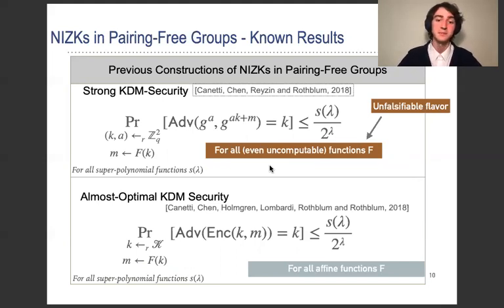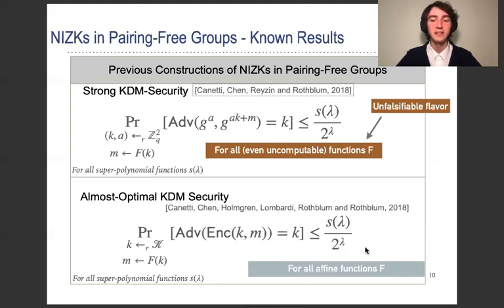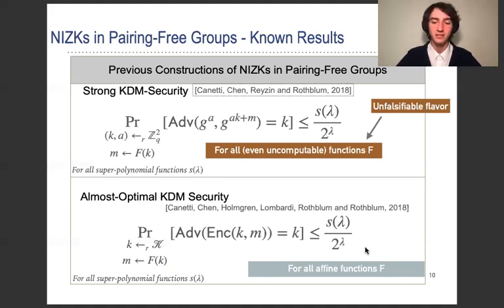This has been improved in a subsequent work. The assumption now has to only hold with respect to a fine function f, which is a falsifiable-flavor assumption. But because the advantage is very small, the challenger still cannot efficiently determine whether the adversary broke the assumption. So we only say it's falsifiable flavor because we can write it as a game between the challenger and the adversary.